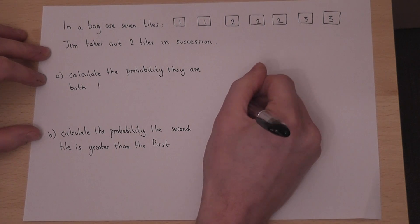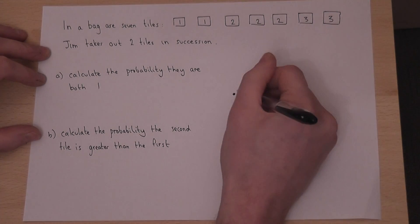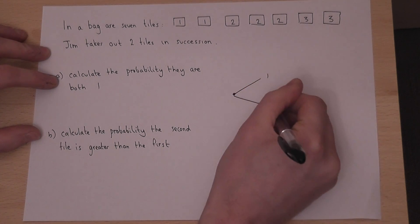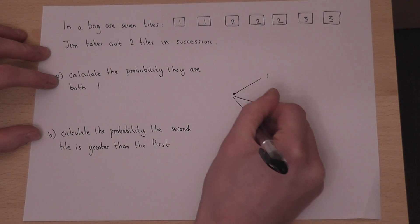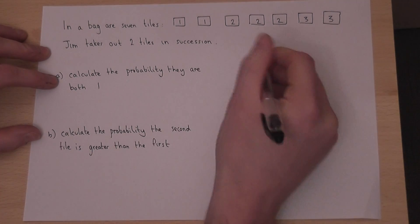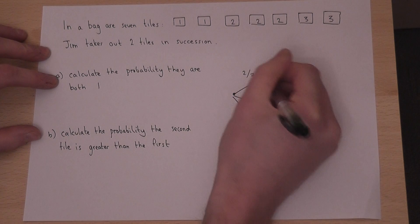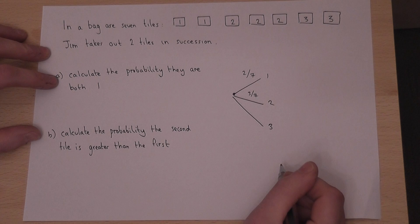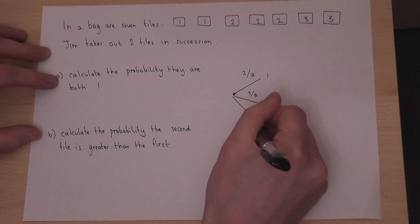When Jim first pulls a tile out, the options are either one, two, or three. The chance of a one is two out of seven, the chance of a two is three-sevenths, and a three is two-sevenths.